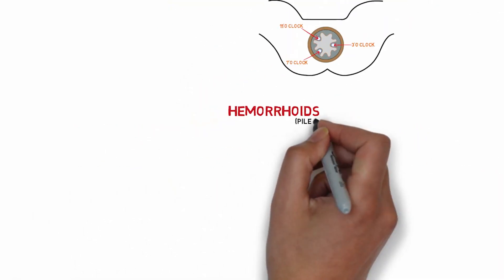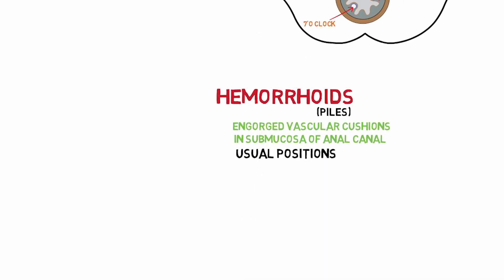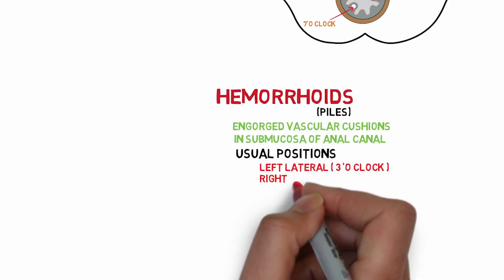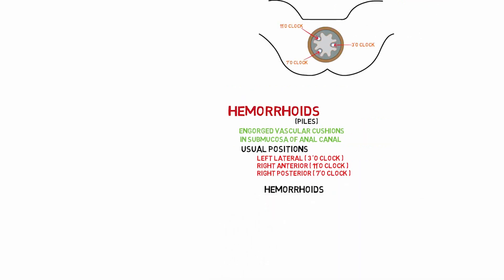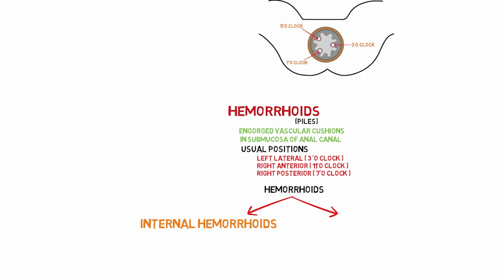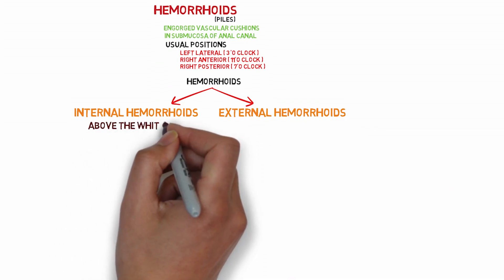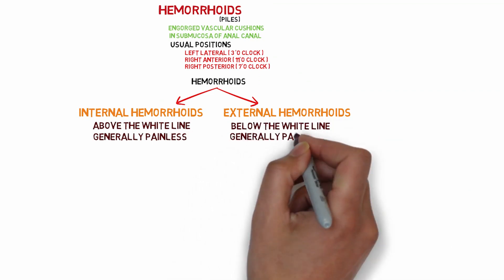Hemorrhoids, or piles, are engorged vascular cushions found within the submucosa of the anal canal. Their usual sites correspond to the same positions as the anal cushions. Hemorrhoids can be divided into internal and external types. Internal hemorrhoids occur above the white line and are generally painless, while external hemorrhoids occur below the white line and are generally painful.